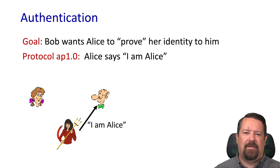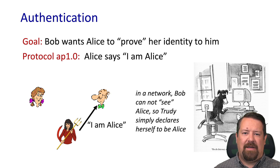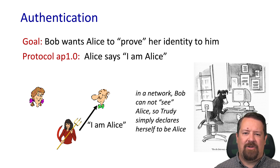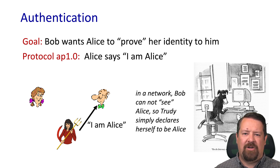But wait — our attacker also says 'I am Alice.' Who's Bob to believe? In real life, if Bob already knows Alice, he might recognize her face or her voice. But in a network, we just have the bits, and 'I am Alice' coming from one source or another looks exactly the same. There's no way for the recipient to differentiate them.